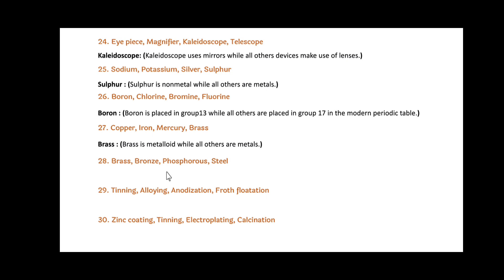Next: Brass, Bronze, Phosphorus and Steel. Here, Phosphorus is the odd one out. Because Phosphorus is a non-metal, while all others — Brass, Bronze and Steel — are alloys.